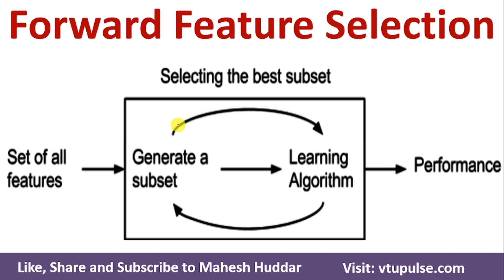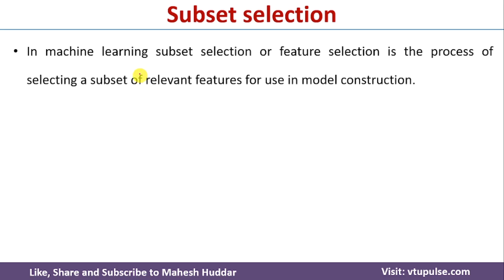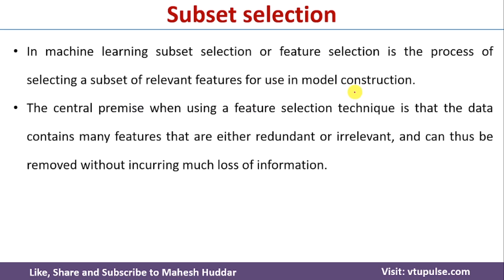Welcome back. In this video, I will discuss forward feature selection in machine learning with a simple example. In machine learning, feature selection is the process of selecting relevant features for the construction of a machine learning model. The central premise of feature selection is that the given data may contain many features, out of which there may be some redundant or irrelevant features. We need to remove these redundant and irrelevant features and retain only the relevant features so that we will get a better model.